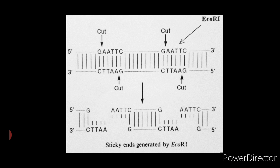For example, the restriction enzyme EcoR1, isolated by Herbert Boyer in 1969 from E. coli, cleaves the DNA between G and A in the base sequence GAATTC.